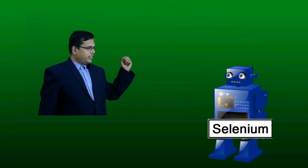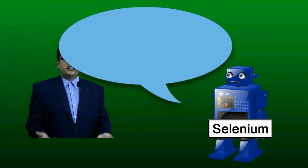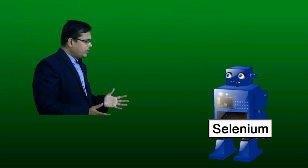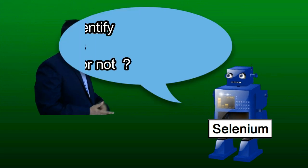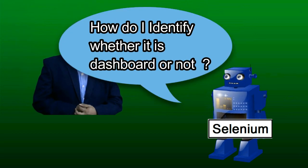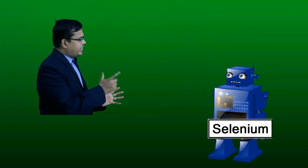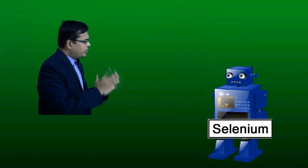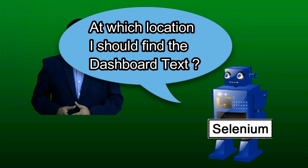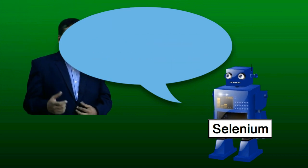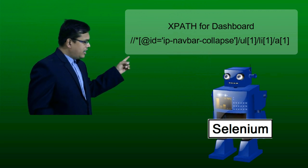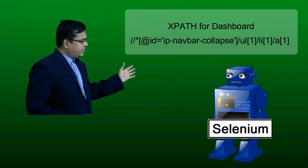Let's consider we are communicating with Selenium. I say: please check whether my test is passed or failed. It says: oh master, how do I do that? I say: check whether we land on the homepage or get a dashboard. It says: sure master, but how do I identify whether it is a dashboard or not? I say: go and check for the text 'dashboard'. If it is present there, then it means we are on the desired page. It then asks: at which location should I find the dashboard text? I say: go to this navigation bar and you will find that text. If it is there, let me know.